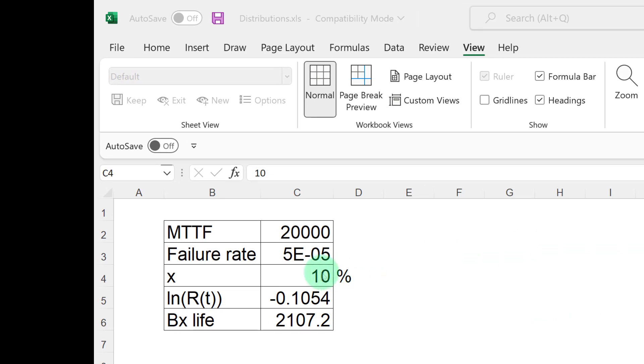Now we can change the value of X from 10 percent to any other percent. Suppose we want to find out B1 life. Then I change X to 1 percent instead and see that the B1 life is 201 hours.